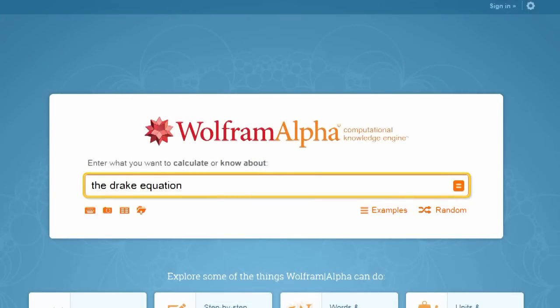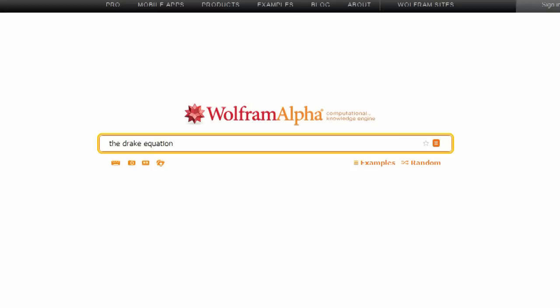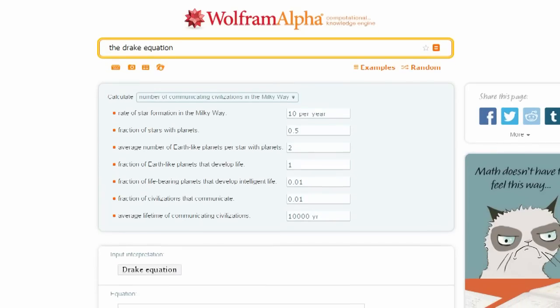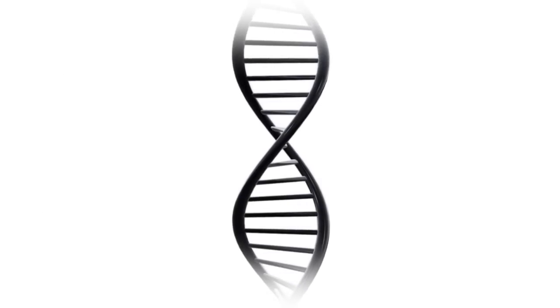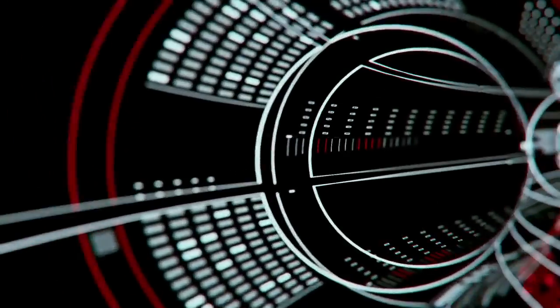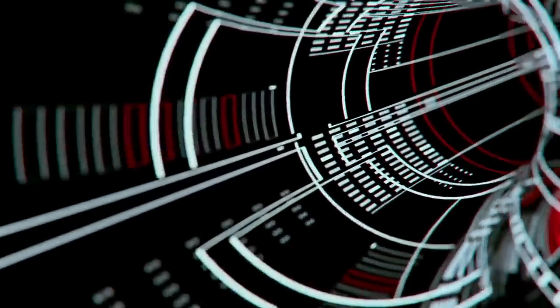There's an equation called the Drake equation, which attempts to estimate the number of active communicative extraterrestrial civilizations in the Milky Way galaxy. It takes into account the number of stars and their rate of formation, how many of those stars have planets orbiting them, how many of those planets are capable of supporting life, how many of those actually go on to develop life, how much of that life becomes intelligent life, how much of that intelligent life becomes technologically developed, and how long it's been since they've been sending out detectable signals in space.